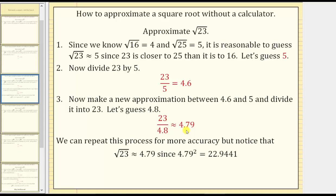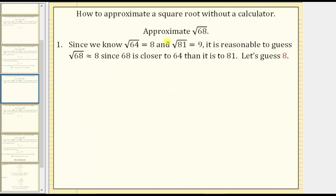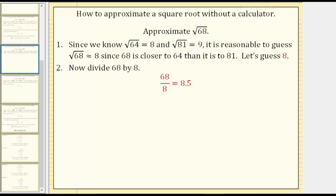Let's look at a second example. Let's now approximate the square root of 68. Since we know the square root of 64 equals 8, and the square root of 81 equals 9, it is reasonable to guess the square root of 68 is approximately 8, since 68 is closer to 64 than it is to 81. Let's let the first approximation for the square root of 68 be 8.